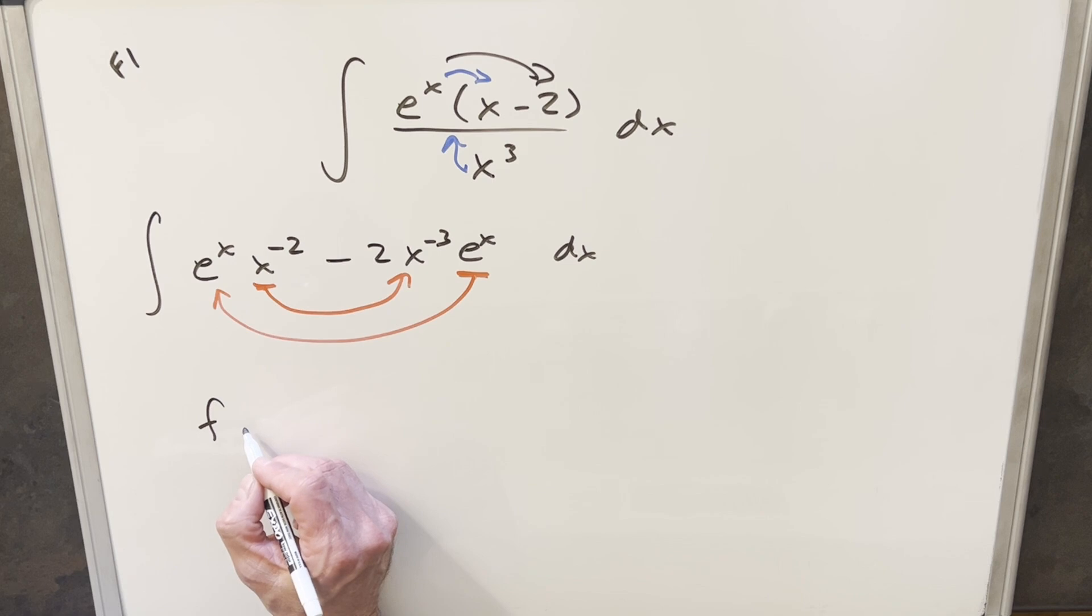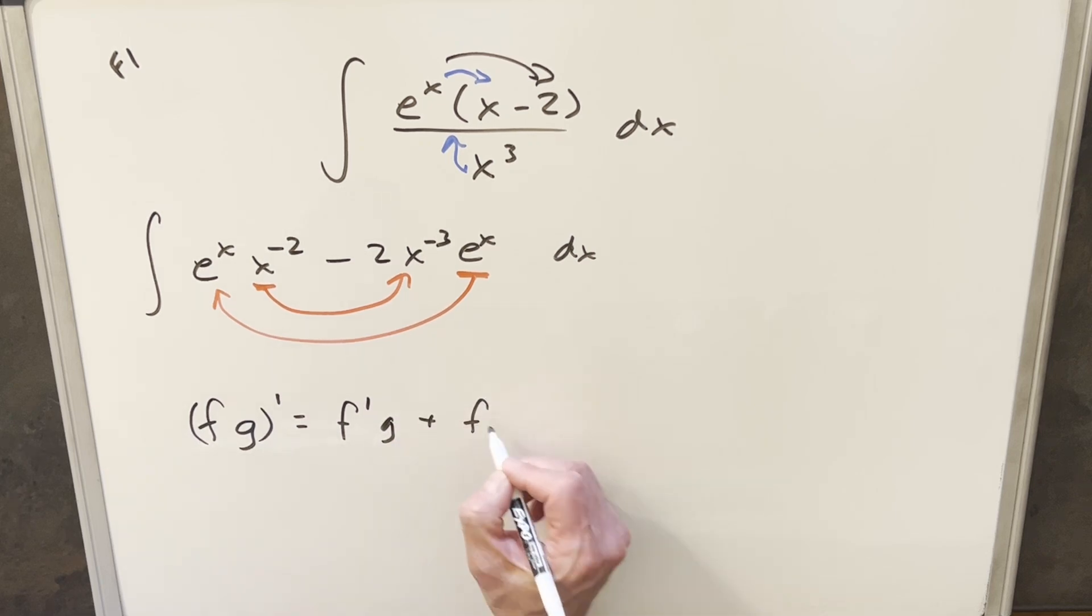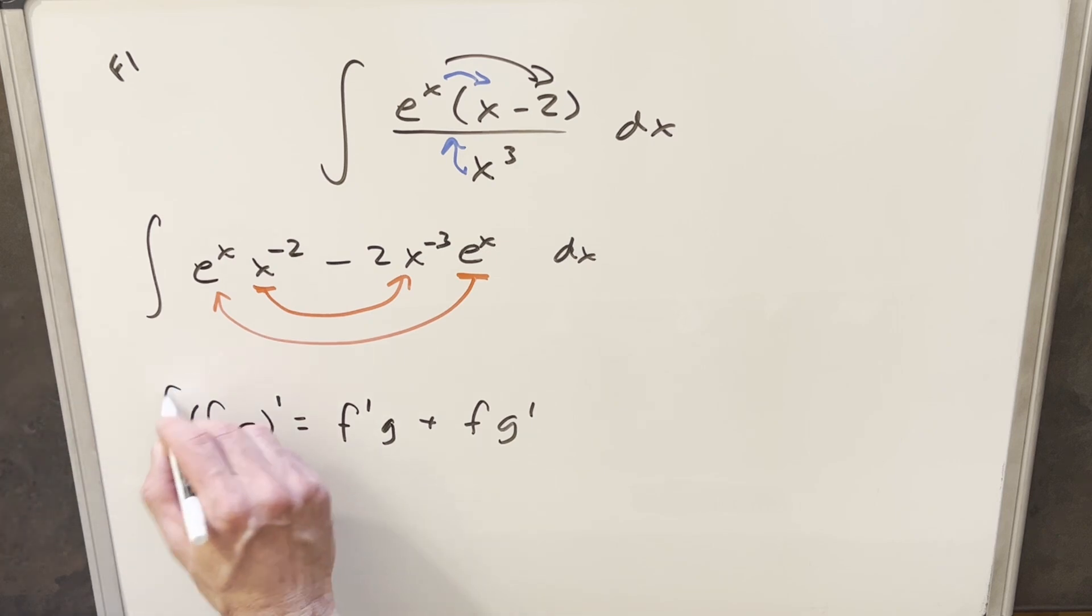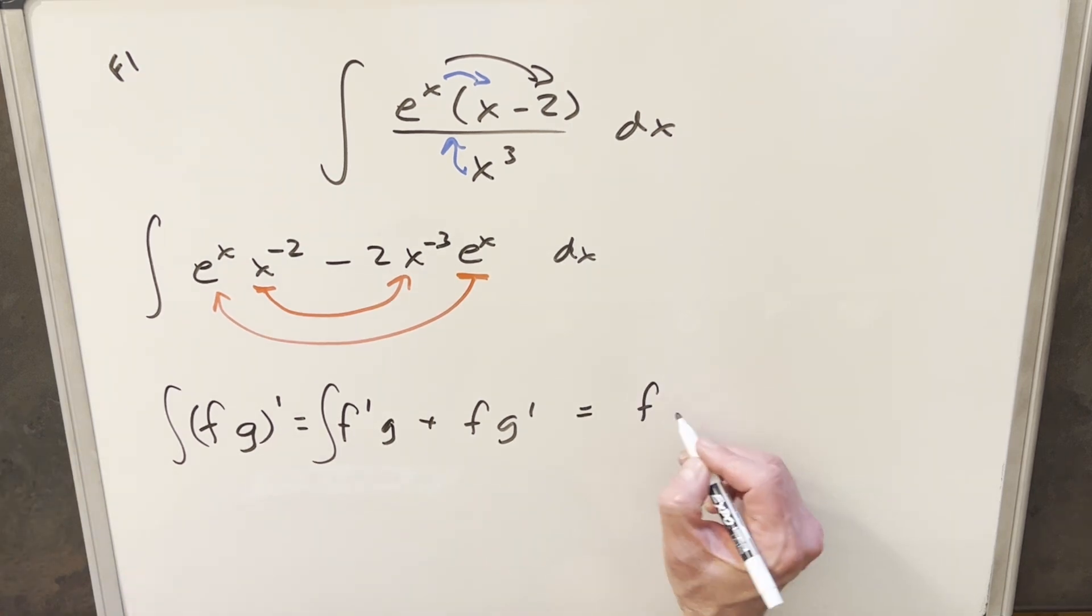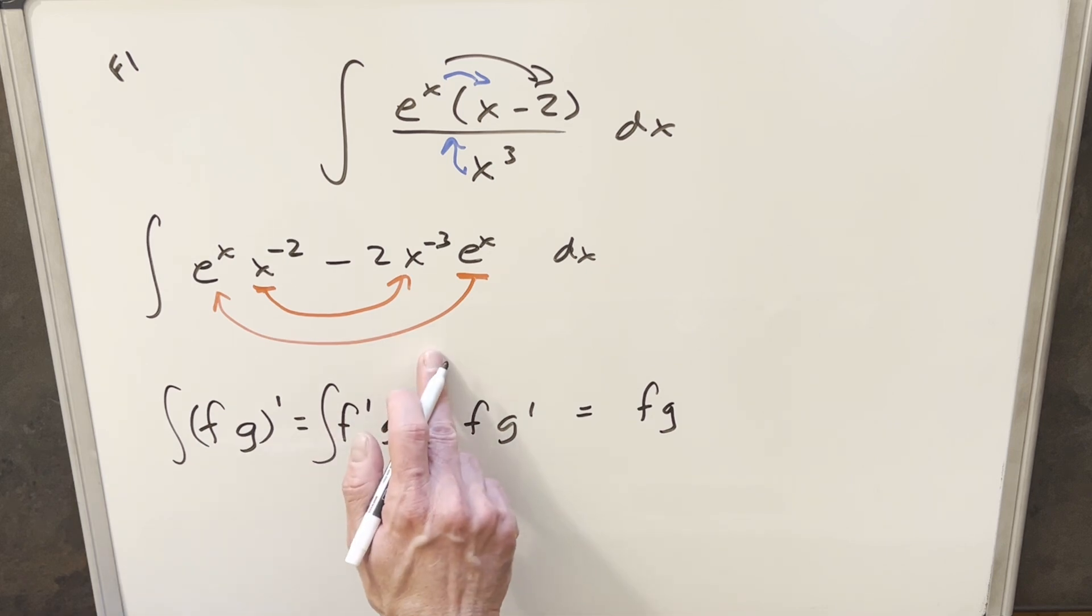So for the product rule, we have, if we have two things, f times g, and we take the derivative, it's going to be derivative of f times g plus f times the derivative of g. The nice thing about this, if you just take the integral on both sides of this equation, then looking at the left side, we've got the integral of a derivative. So integrating this derivative, it's just going to be f times g. We just need to make sure we have our integral in this form here, and then we'll have our solution.